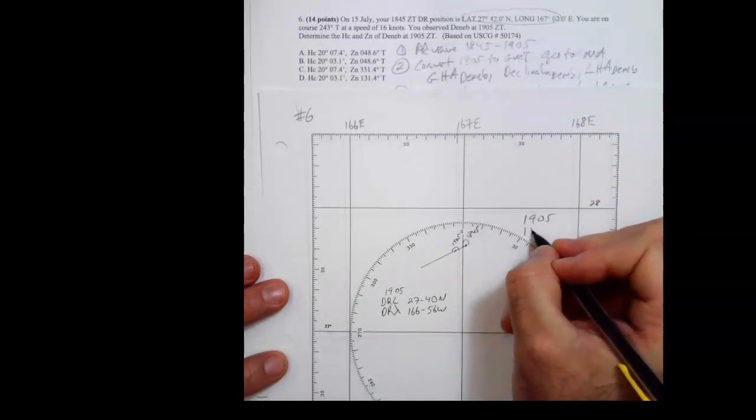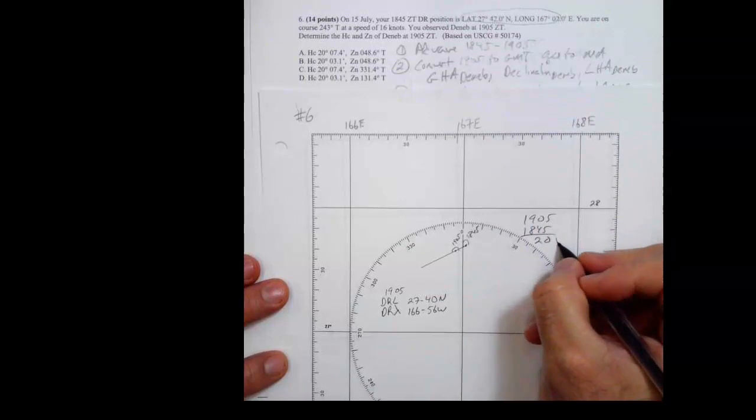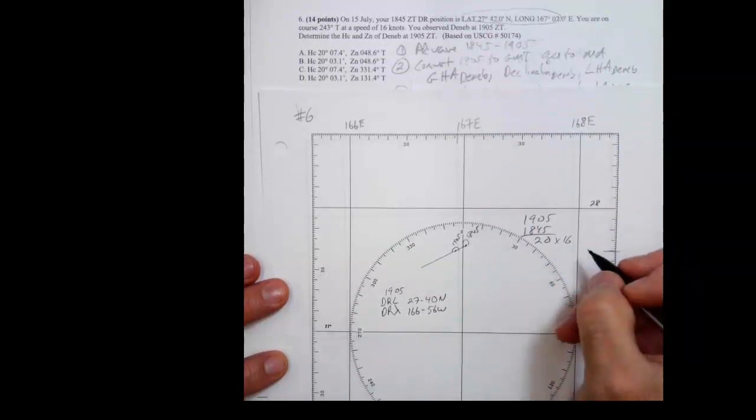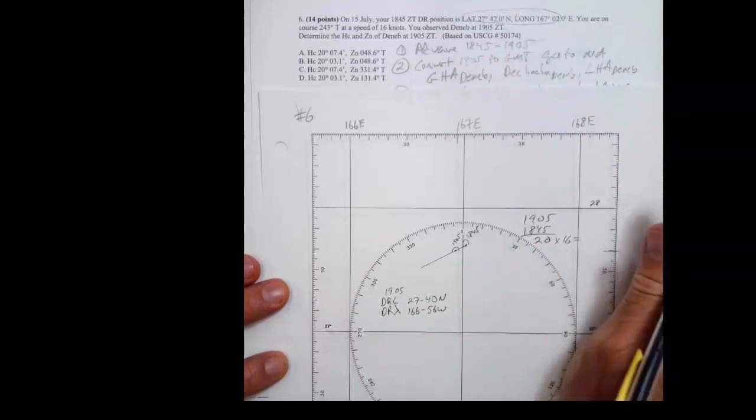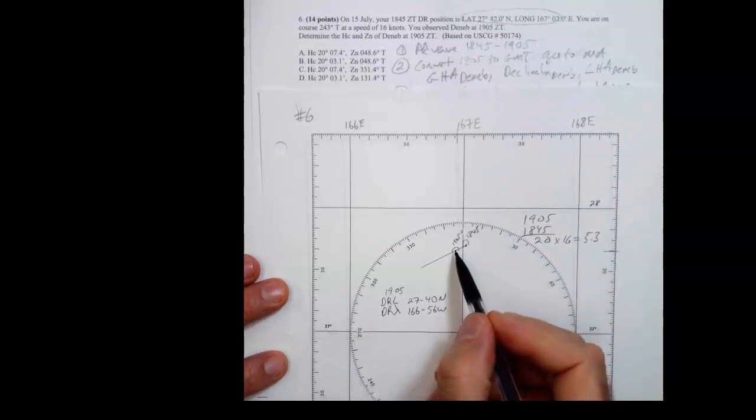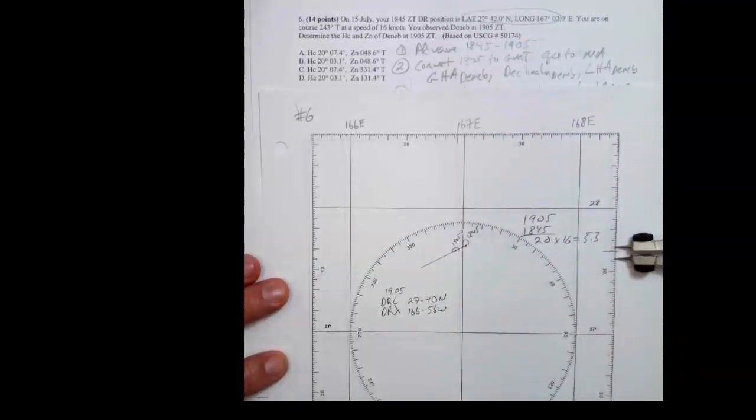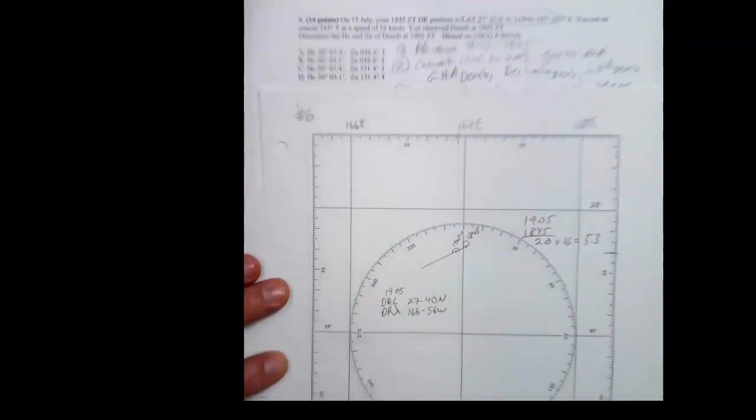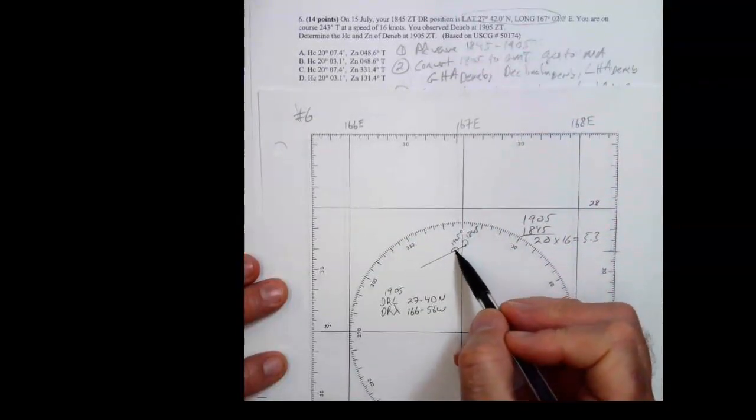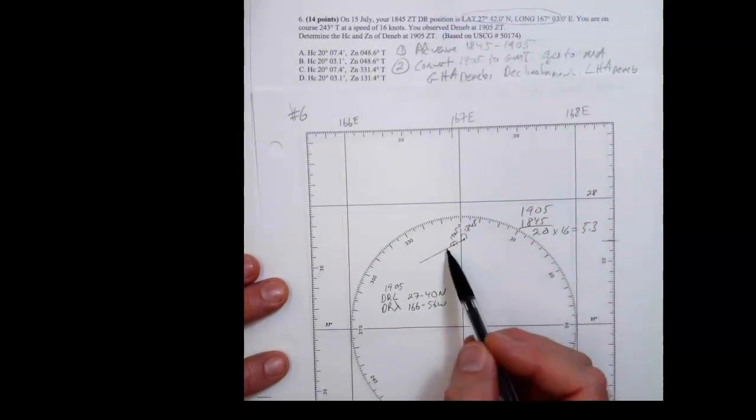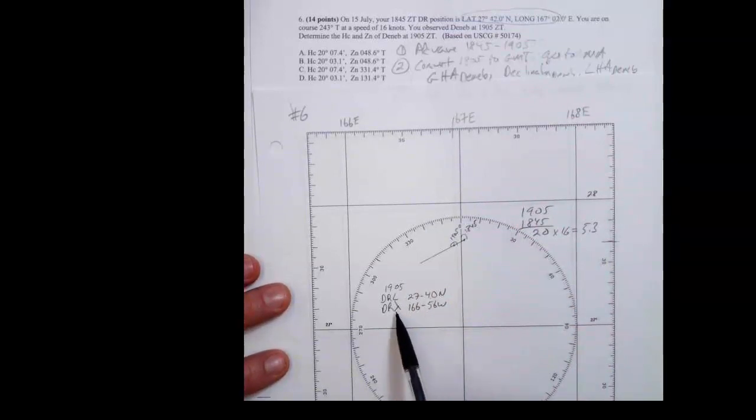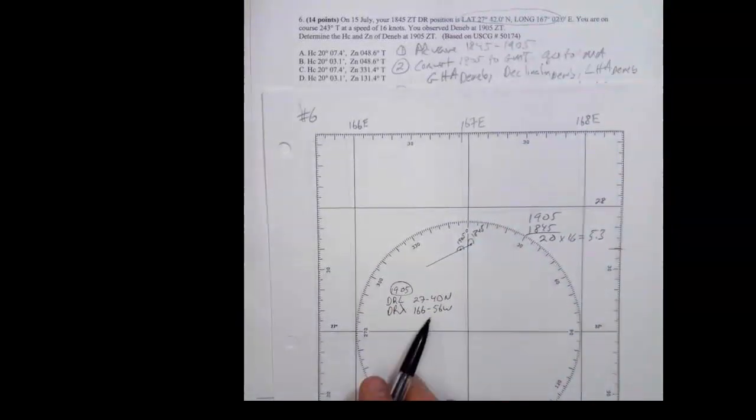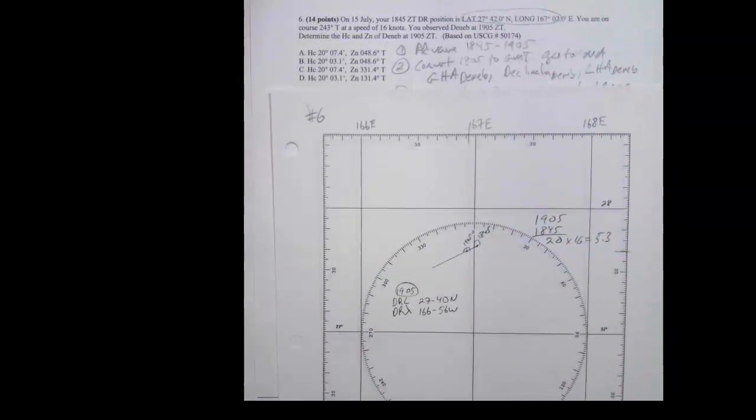For this advance, 1905 minus 1845, that's 20 minutes times 16 knots. I divide 20 by 16 and divide that by 60. That means I'm going to go 5.3 nautical miles. So I took my dividers, measured 5.3, and came over here. That is my 1905 position. I pulled off the latitude and the longitude for that.